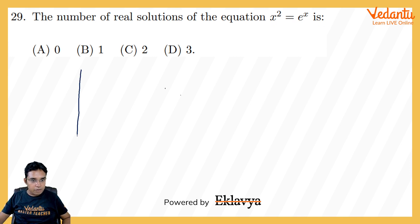So if I make graph with little bit of precision, I think we can conclude how many solutions we may get. Like for 0, e power x will have value 1. At x is equal to 1, e power x will have value equal to almost 3 somewhere here. So this graph will be going like this.